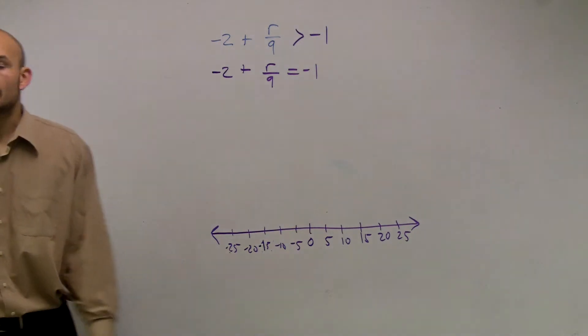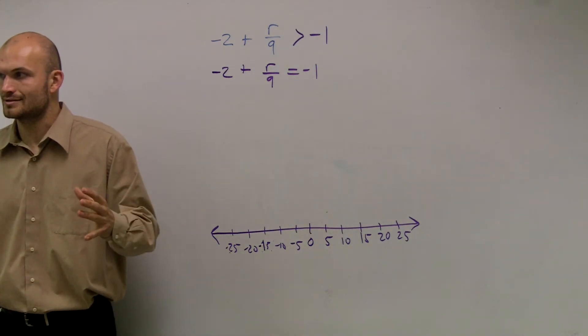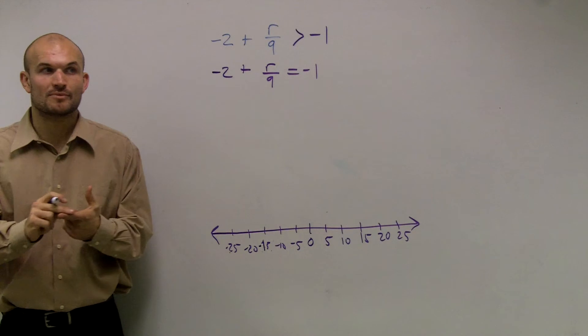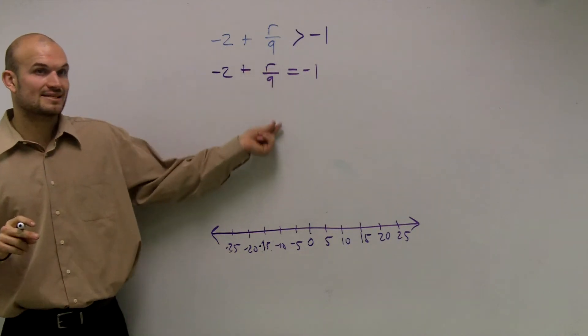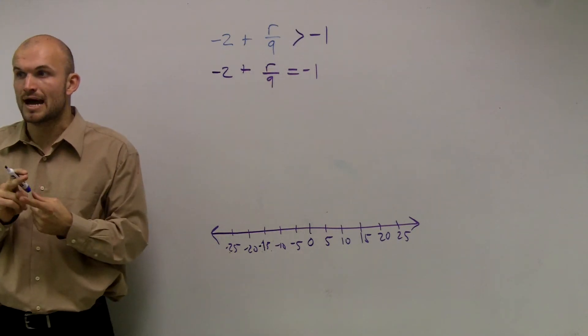All right, and I'm going to go through this very slowly. Remember, to get our variable by itself, we need to undo the operations.